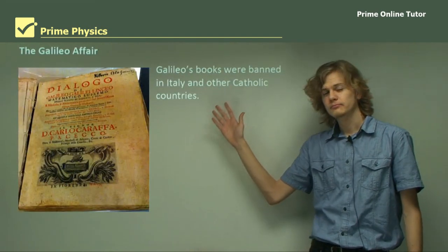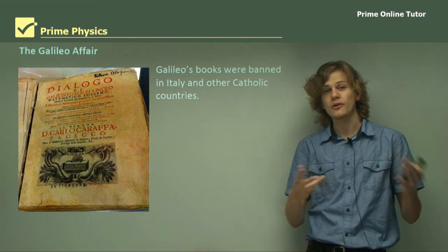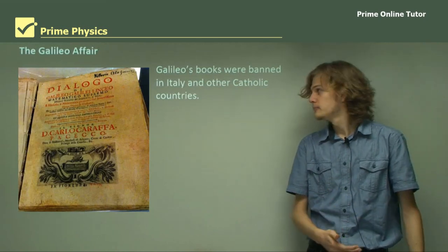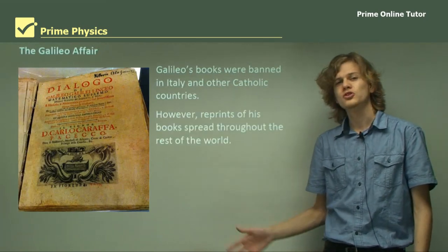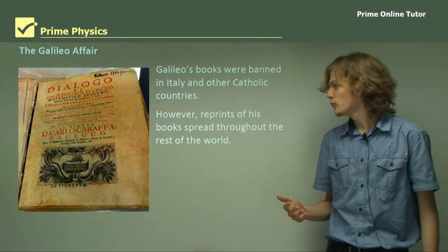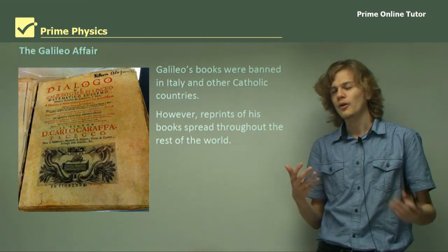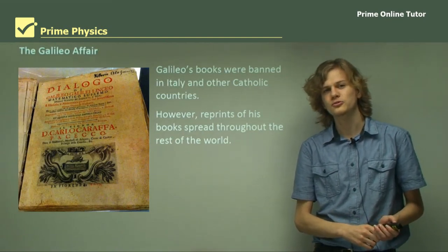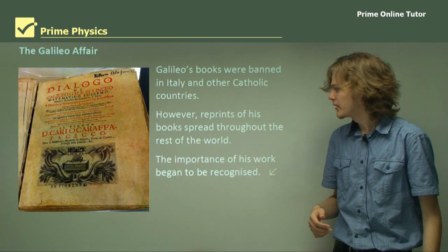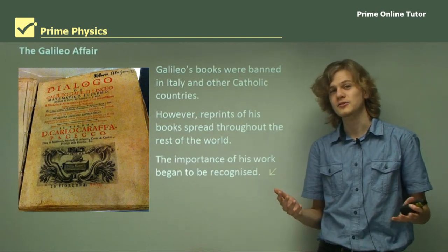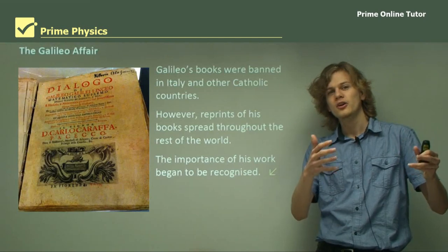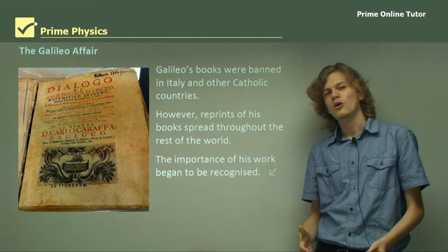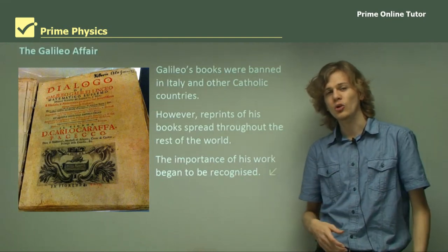Galileo's books were banned all over Italy, where he was from, as well as in all other Catholic countries, because they were seen as going against the Bible, the Word of God. However, reprints of his book spread to other countries of the world. We can see a very old copy of his book from a rare bookshop. The importance of his work began to be recognized as it spread, and people began to see that his observations were unarguably proof that the Earth was orbiting the Sun and not the other way around.